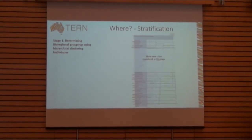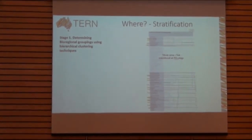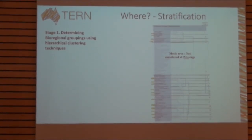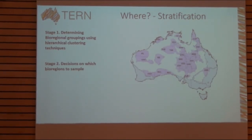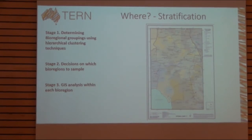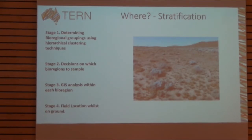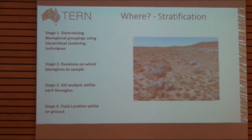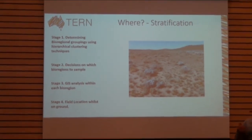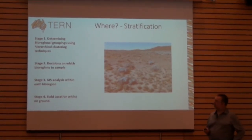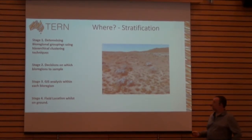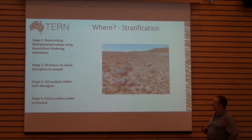We determine where we put plots based on a stratification procedure where we group bioregions — areas of similar environment. We then group bioregions that are similar and pick one to sample well. Once within a bioregion, we gather as much information as possible and do a GIS analysis, then pick areas of interest to sample. The last step is my field team going out, with the very final decision necessarily made out in the field, since you can never remove that step of determining whether the plot is located in what we're targeting and whether it's homogeneous.